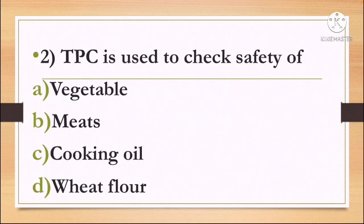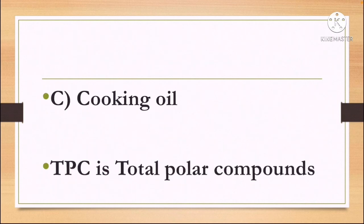Next question: TPC is used to check the safety of — Option A: Vegetable, Option B: Meat, Option C: Cooking Oil, and Option D: Wheat Flour. The correct answer is Option C, Cooking Oil. TPC stands for Total Polar Compounds.